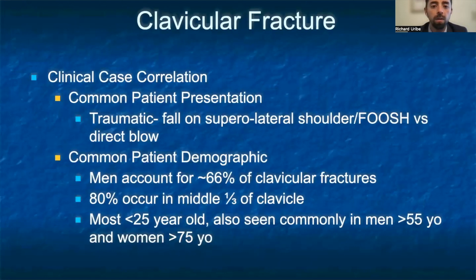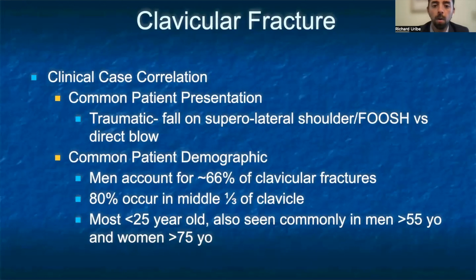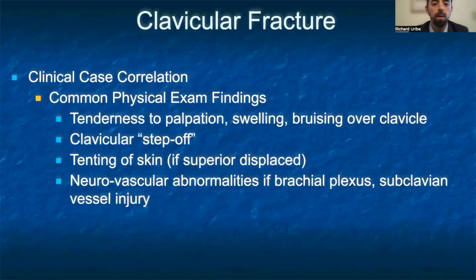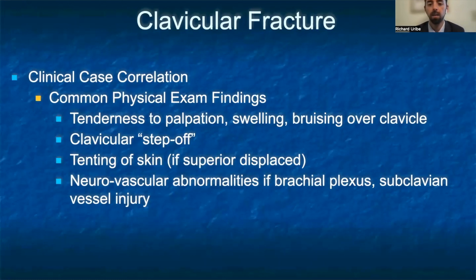The next common condition we will discuss is clavicular fractures, which often occur secondary to a fall on the superior lateral shoulder or outstretched hand, or a direct blow to the clavicular region. Two-thirds of clavicular fractures occur in men, and 80% of all clavicular fractures are usually in the middle third of the clavicle. Common physical exam findings include tenderness to palpation, swelling, and bruising over the clavicle. If the clavicle is displaced, you may note a step-off or even skin-tenting if one of the fragments is superiorly displaced.